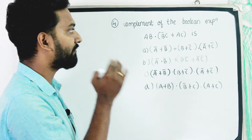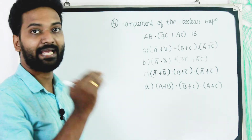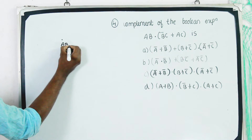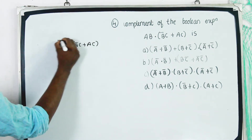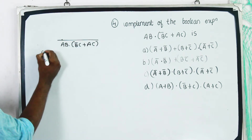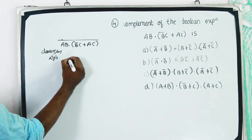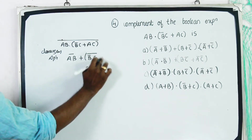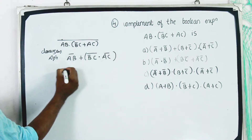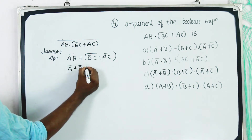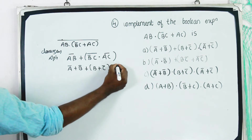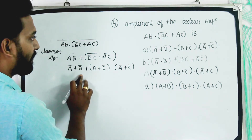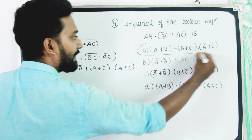The complement of the Boolean expression AB dot B complement C plus AC is found by applying De Morgan's. We get: A complement plus B complement plus B plus C complement, dot A complement plus C complement. The answer is Option A.